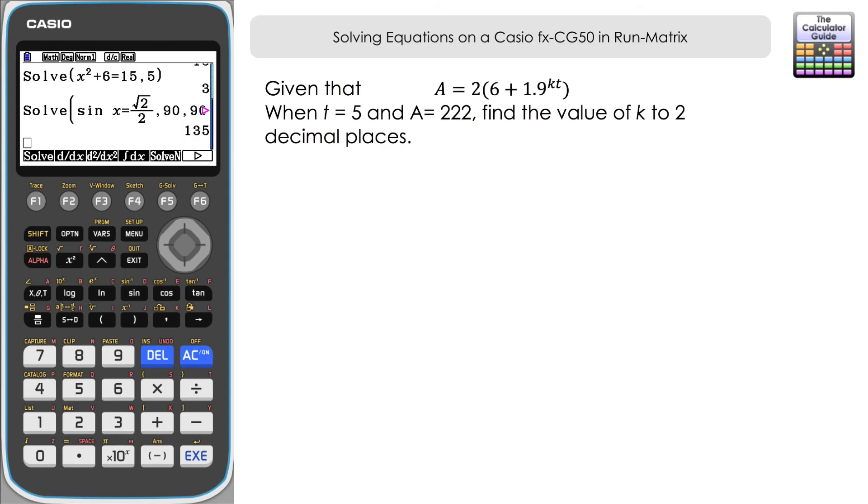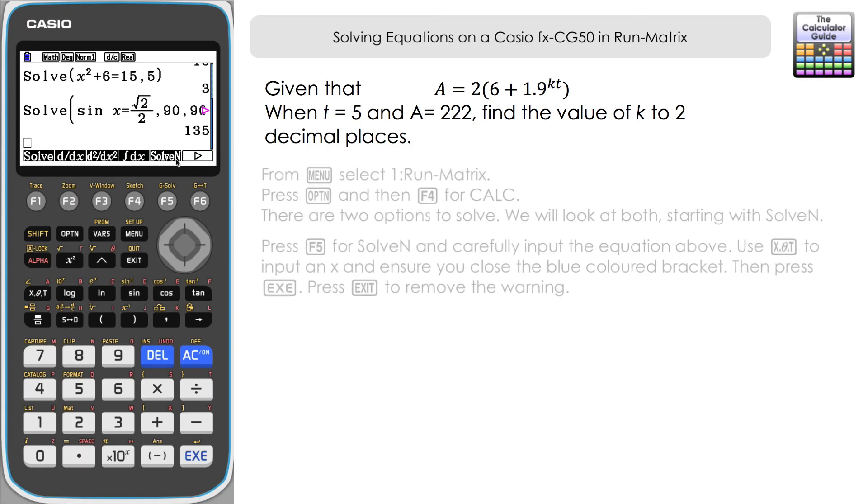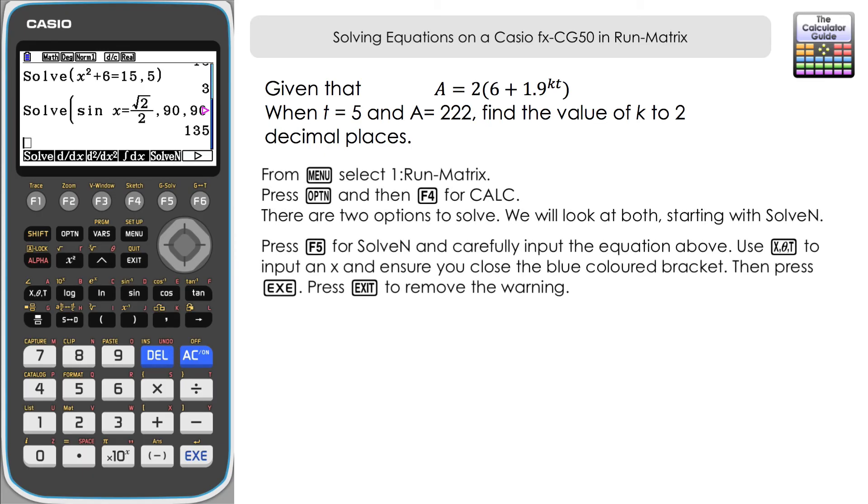On to the next example now. Given that a = 2(6 + 1.9^kt), when t = 5 and a = 222, find the value of k to two decimal places. And we're going to switch back to SolveN for simplicity in this example. So it's SolveN and the brackets will open. Now we know a = 222 in this example.